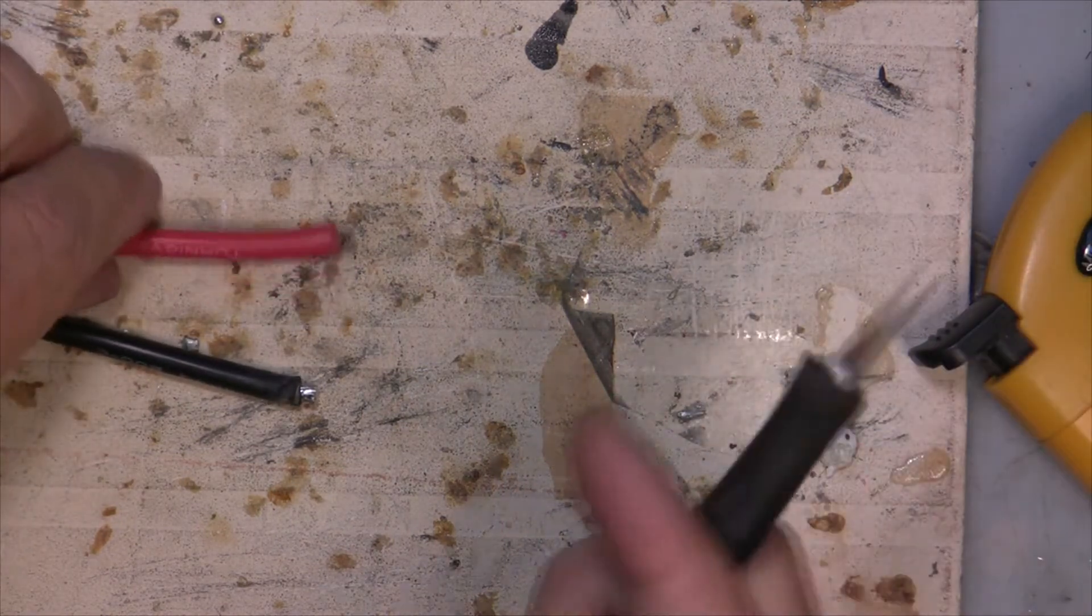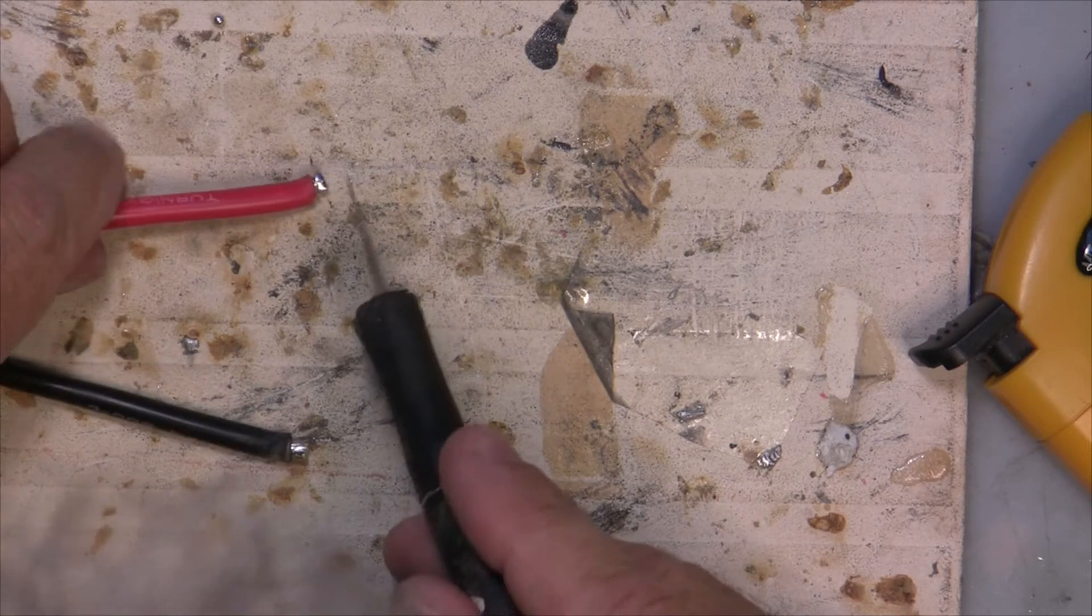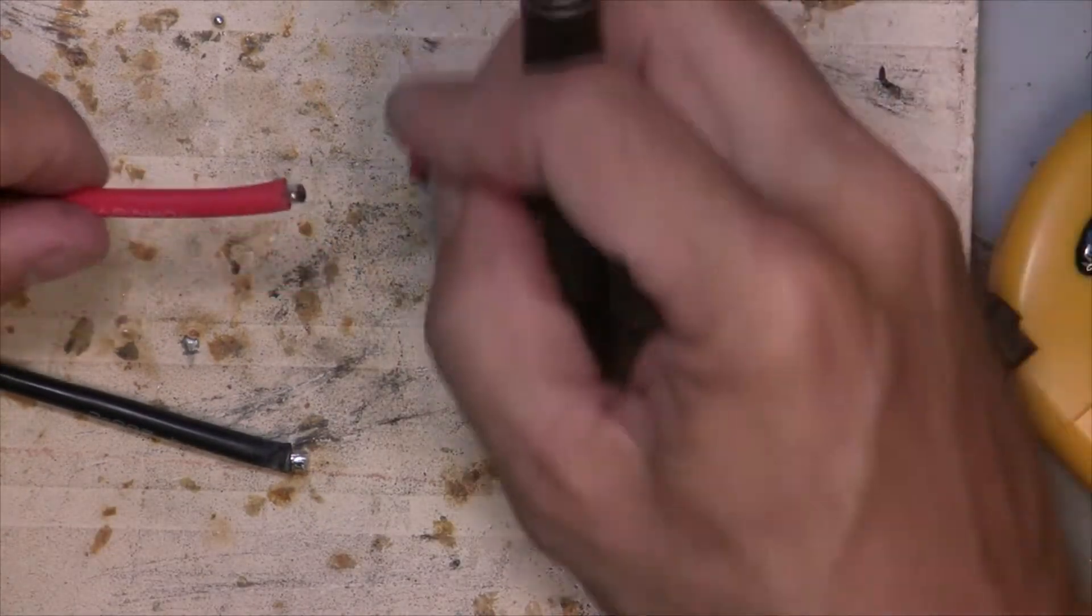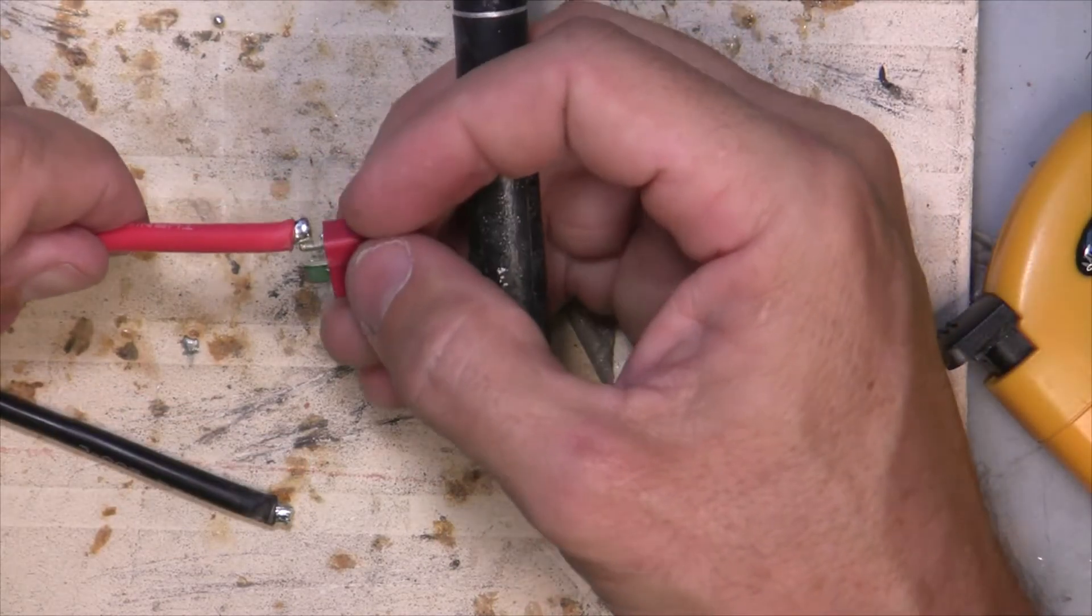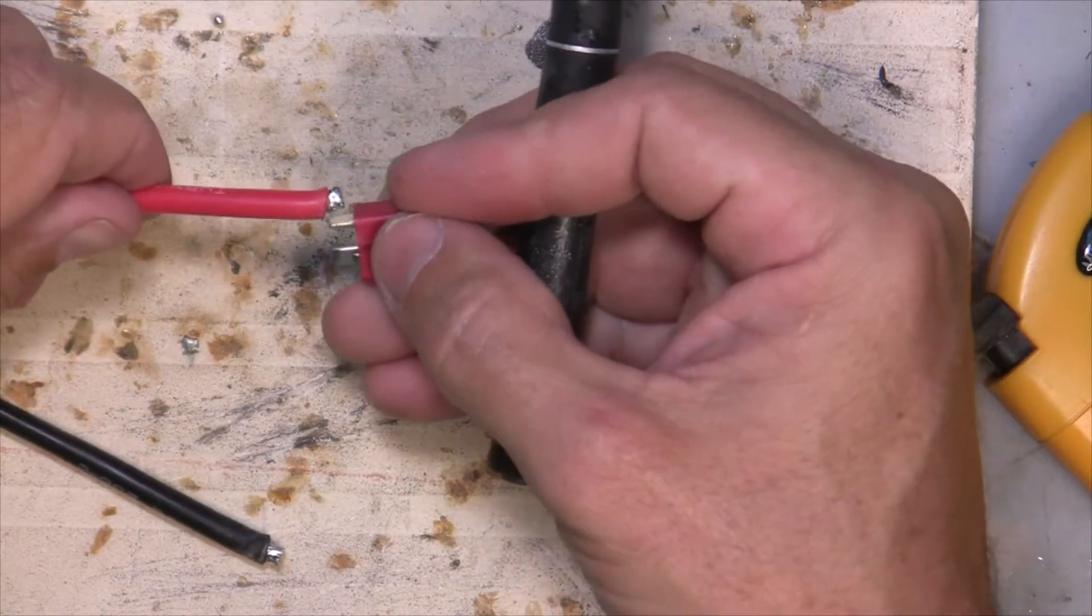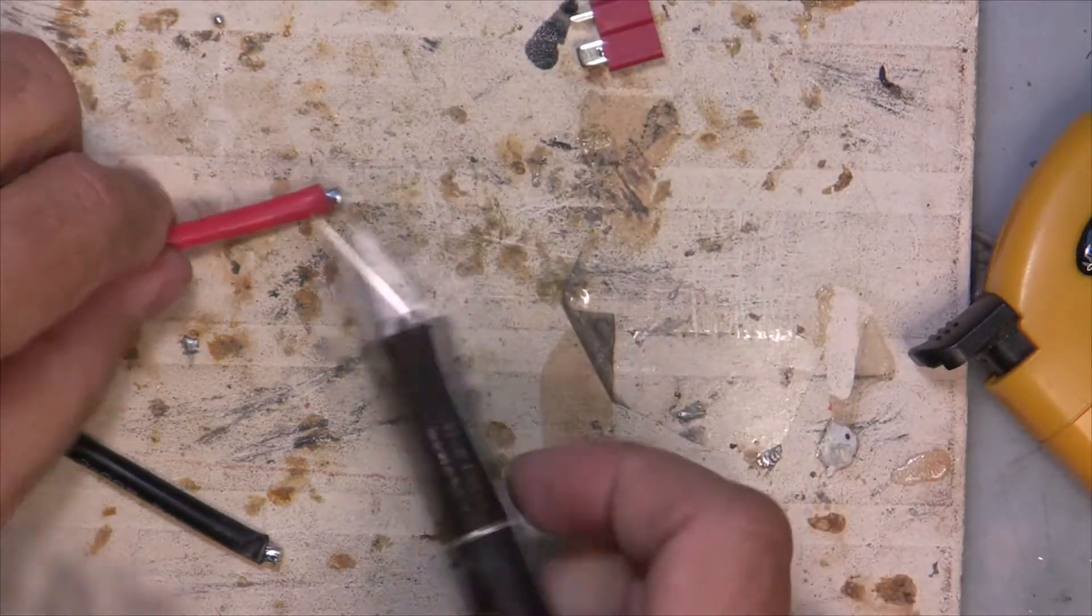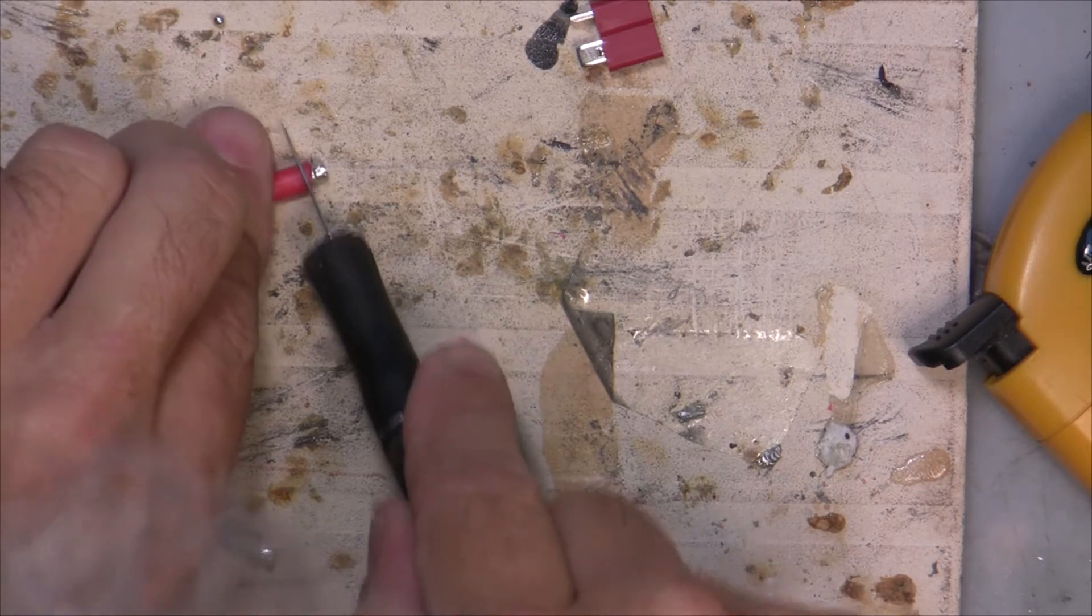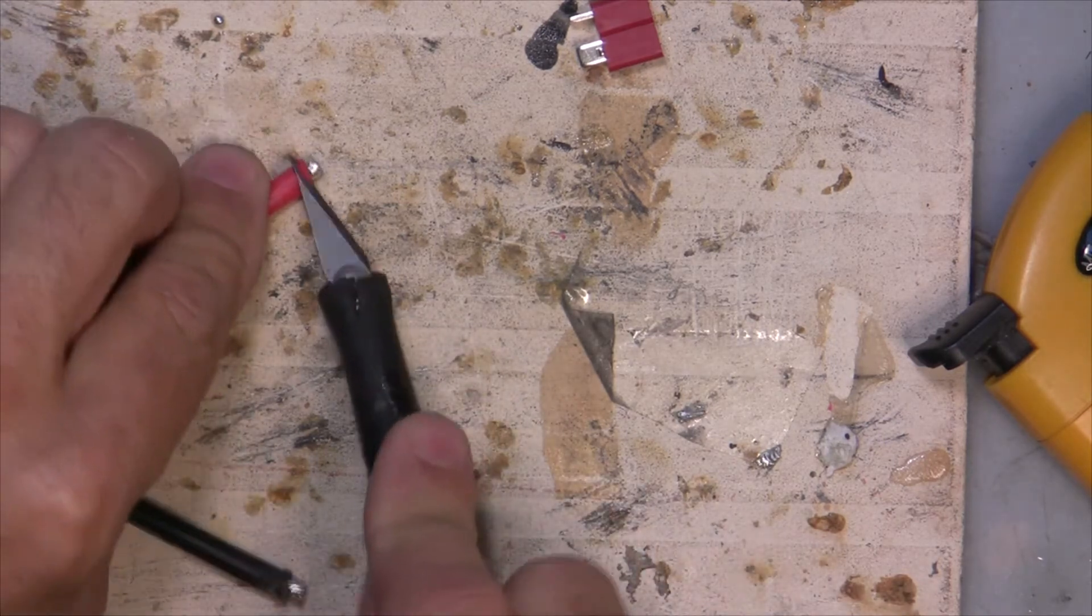So the first thing I like to do is there isn't that much wire exposed for the Dean's connector. In the Dean's connector, you want to use as much of the connector as possible. So you can see that I need to strip off just a little bit more insulation. I'm just using the X-Acto blade to trim off a little bit more insulation here.